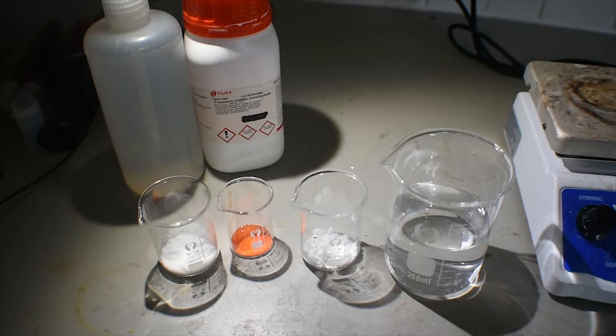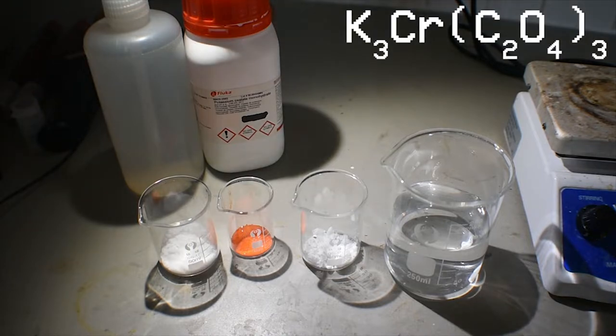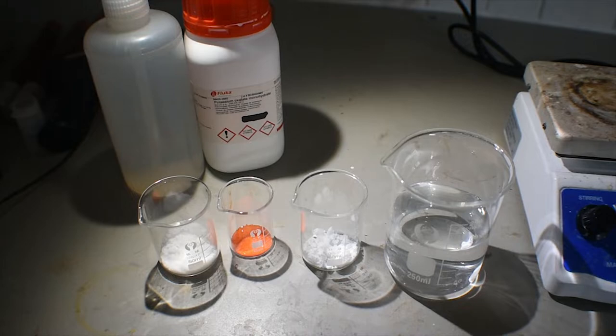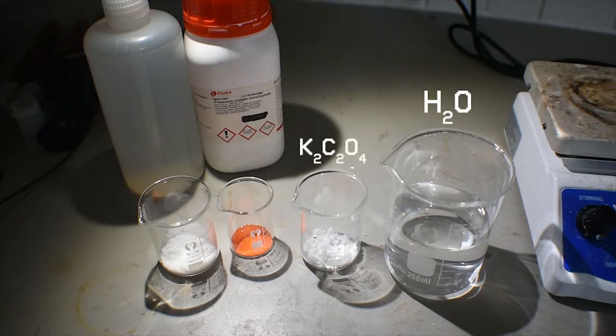These are the reagents we will need to make potassium trisoxalatochromate, a very nicely colored blue complex of chromium-3. We will need 160 milliliters of distilled water, you can see that over on the right, 4.6 grams of potassium oxalate, you can see that in the beaker, second from the right.